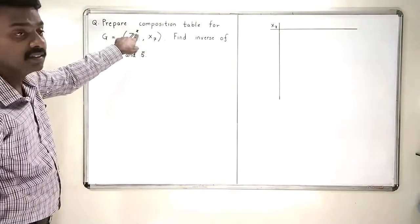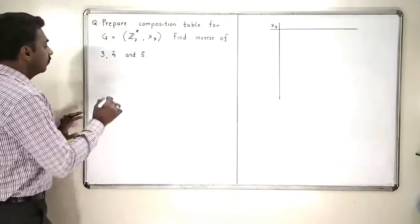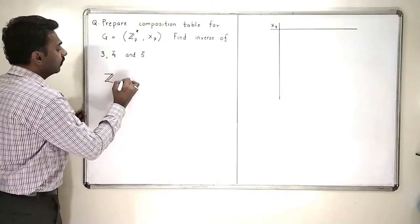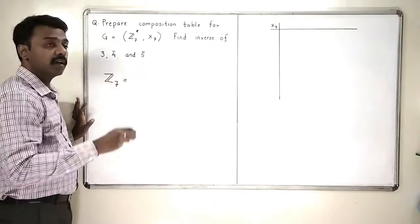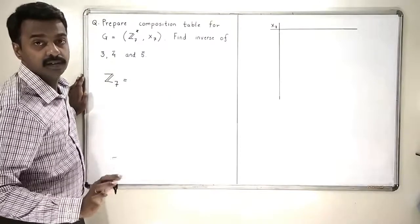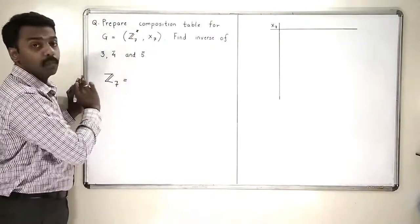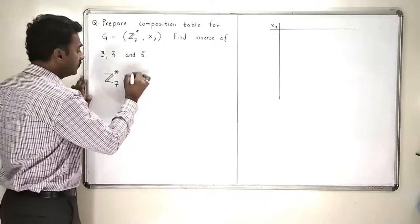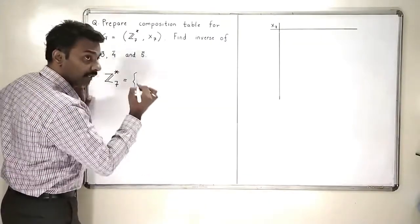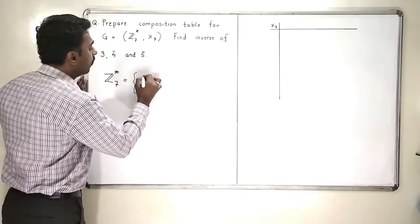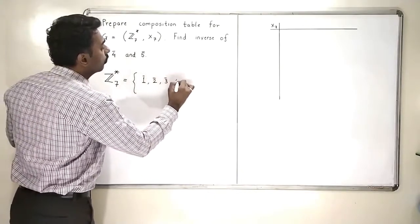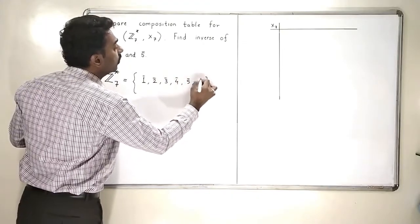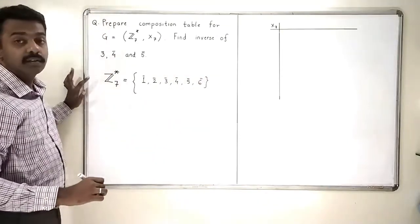Z7 star means we are going to omit the 0 element. The elements of Z7 are 0-bar, 1-bar, up to 6-bar. But since we are omitting 0 because of the star, the elements of Z7 star are 1-bar, 2-bar, 3-bar, 4-bar, 5-bar, and 6-bar.